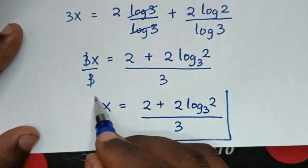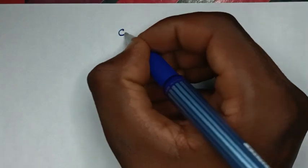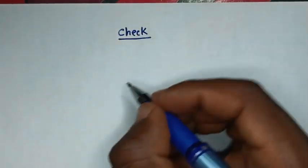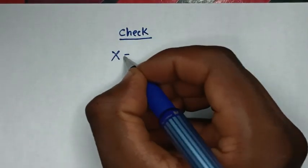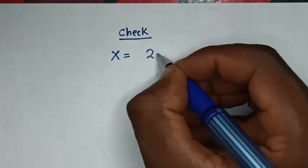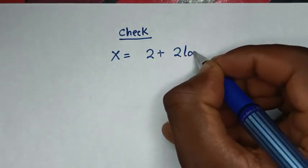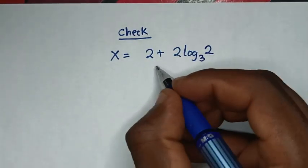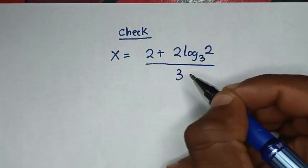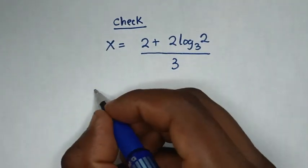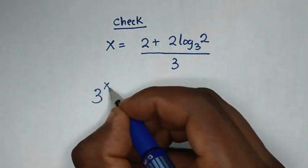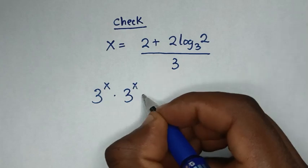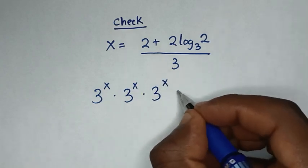Now let's verify our answer. Our value of x is 2 plus 2 log base 3 of 2, all over 3. We substitute this back into 3 power of x times 3 power of x times 3 power of x equals 36.